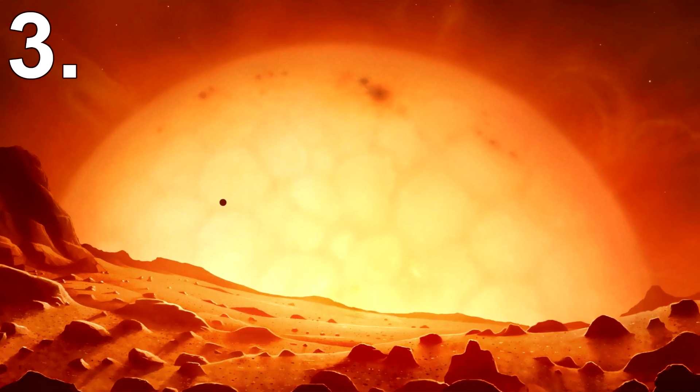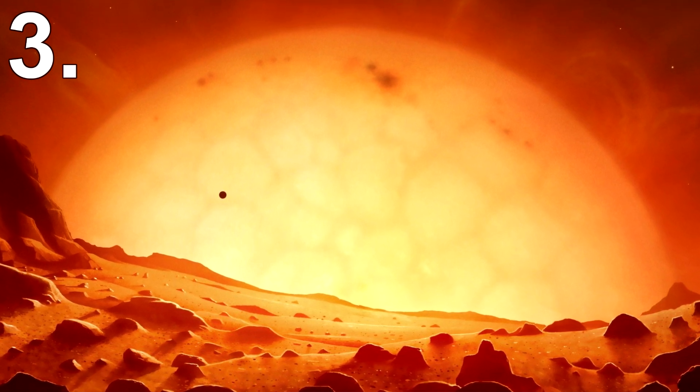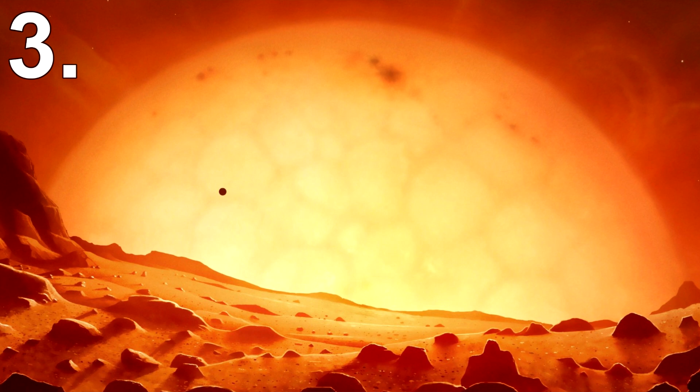Number 3. Earth's orbit will change. When the sun dies it sadly takes all life on earth with it. Without a doubt everything on earth will die but our planet itself will still be intact.